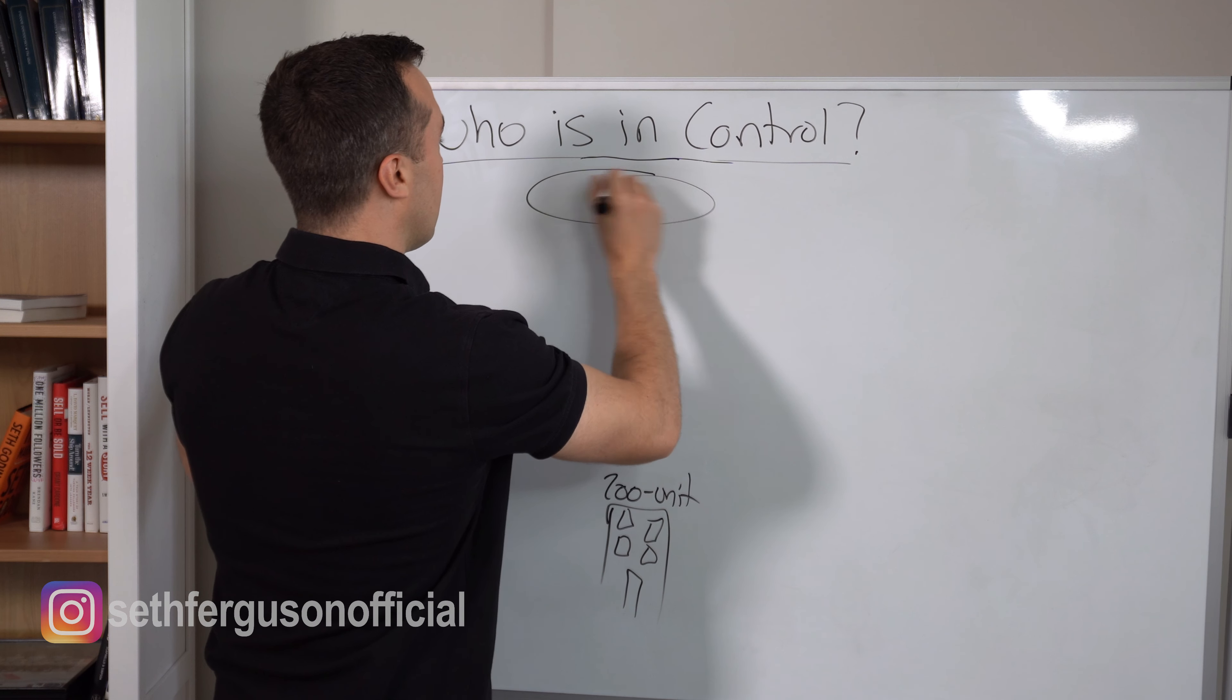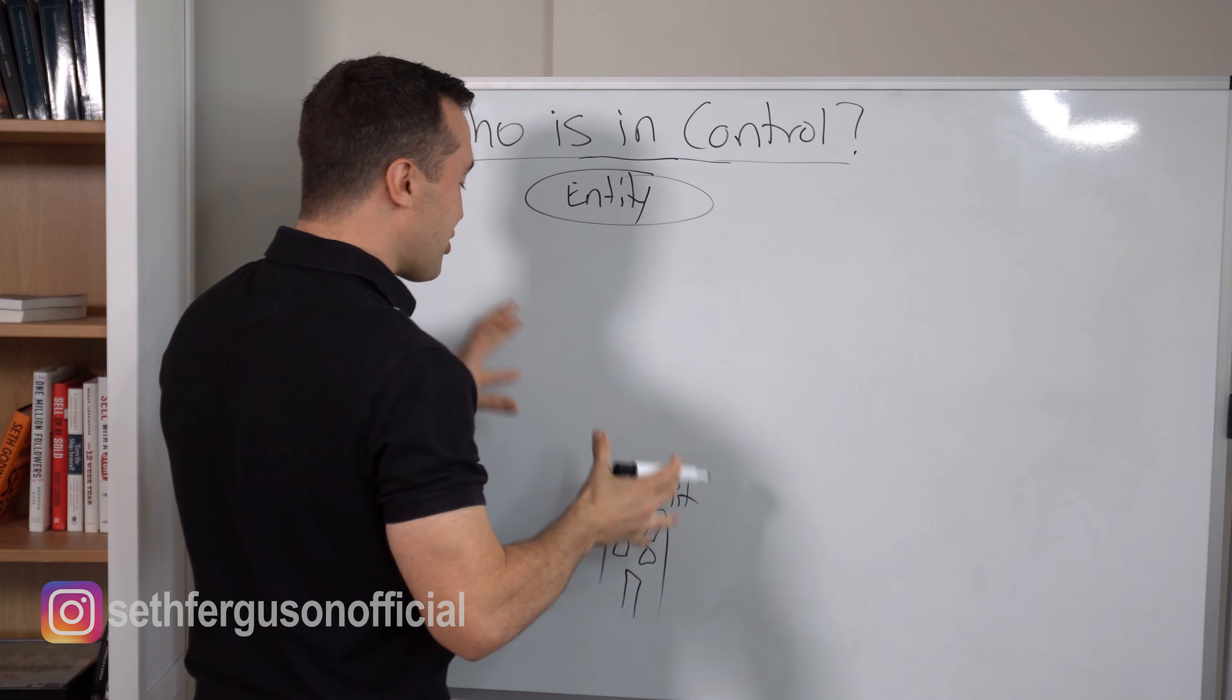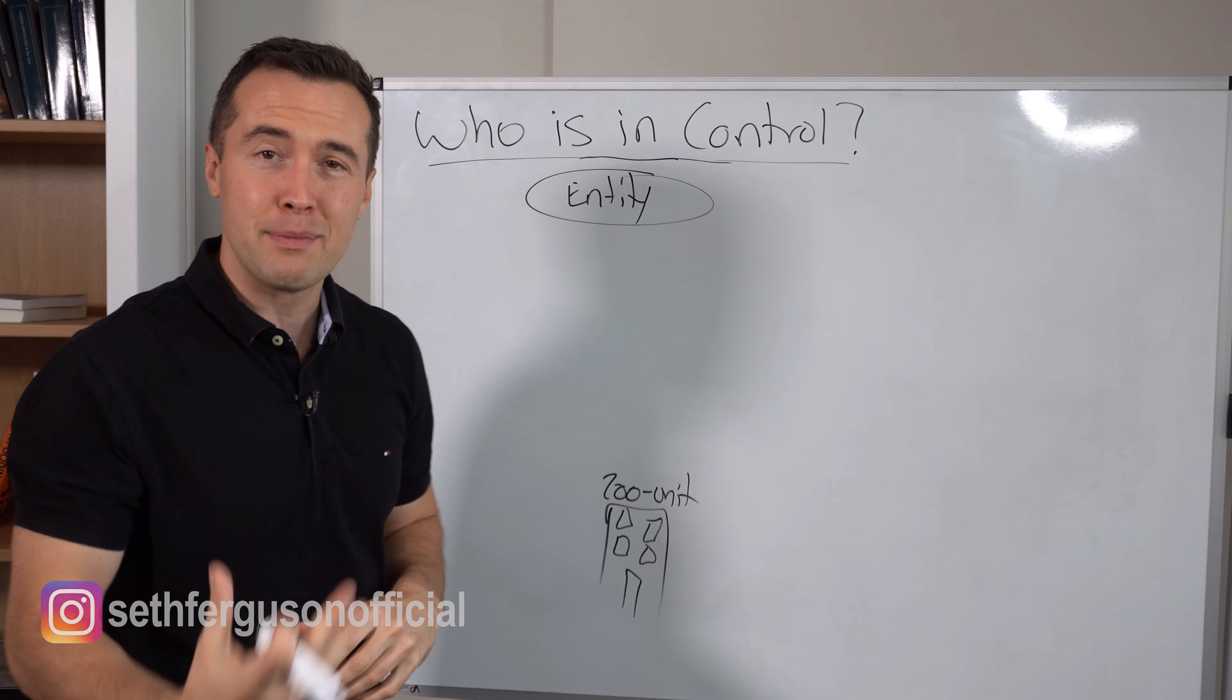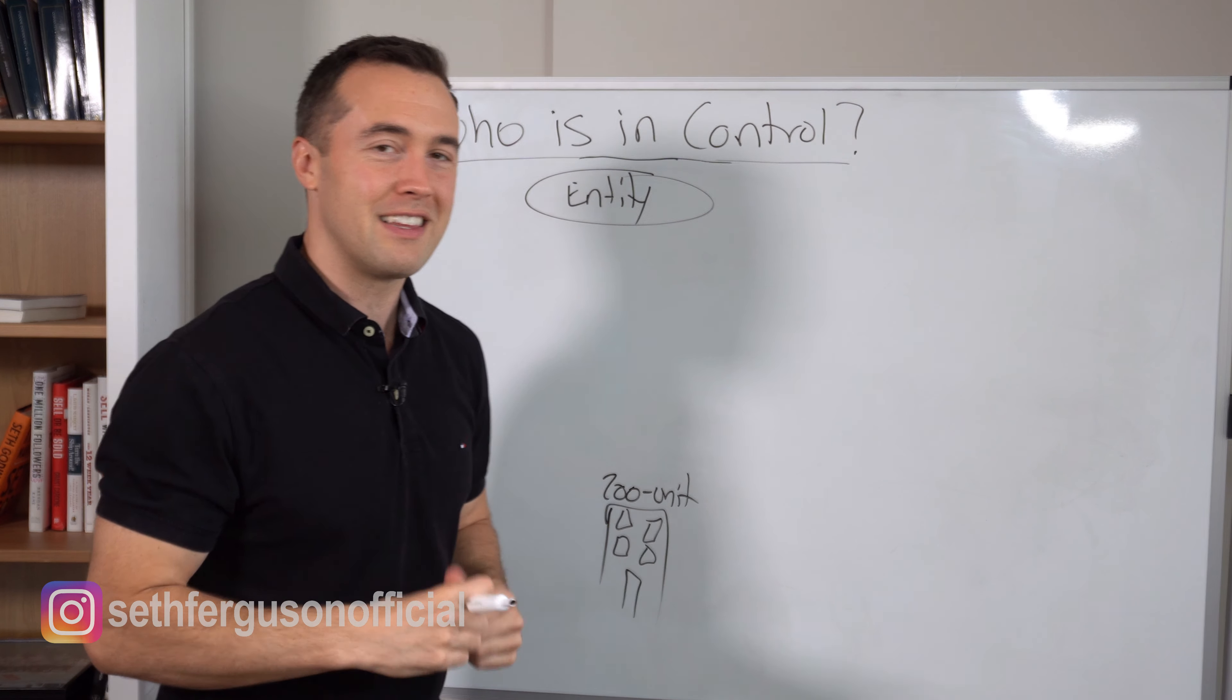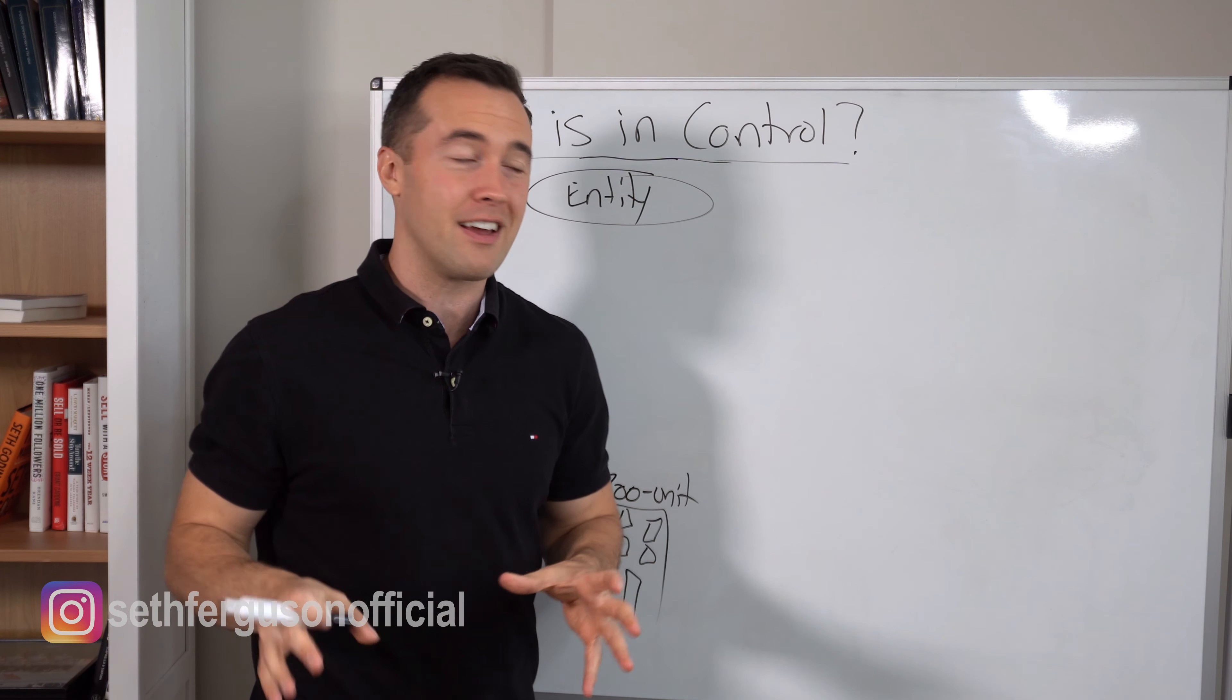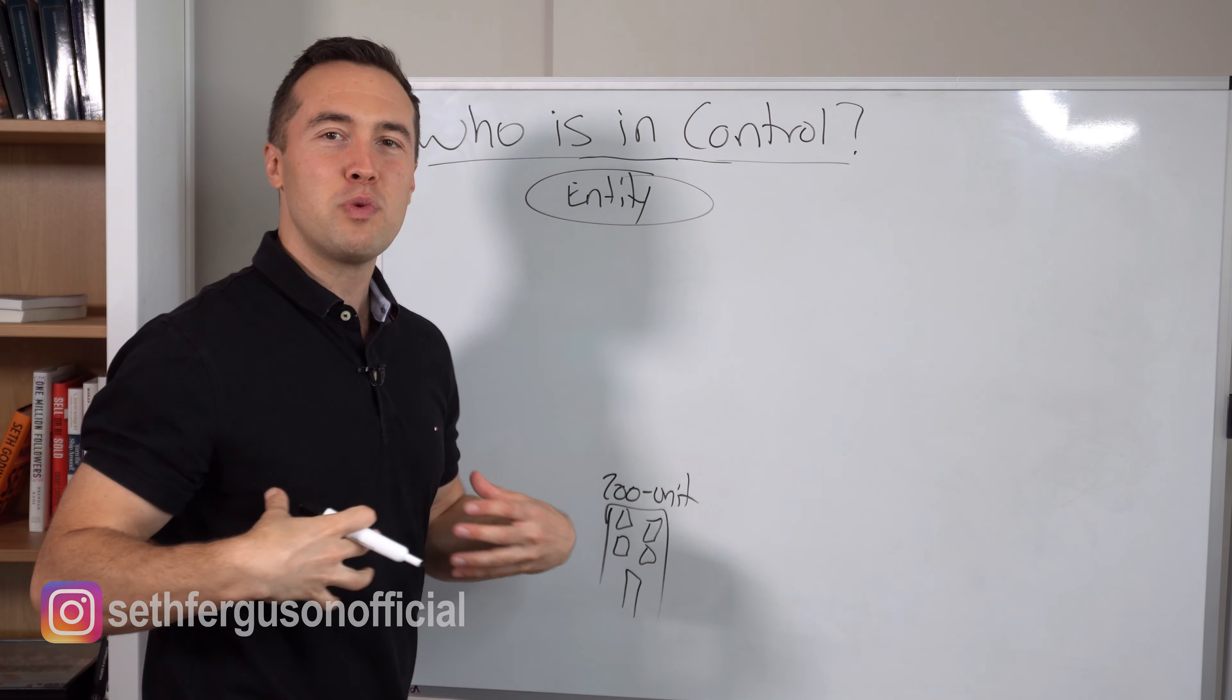On layer number one, we have our entity. This is the entity that actually owns the piece of real estate. This can take the form of an LP, limited partnership, an LLC. There are a couple different forms that this can take, and this will be dependent upon the type of investment and the structure.